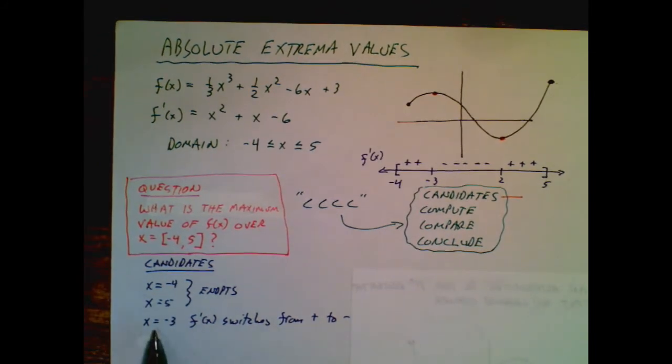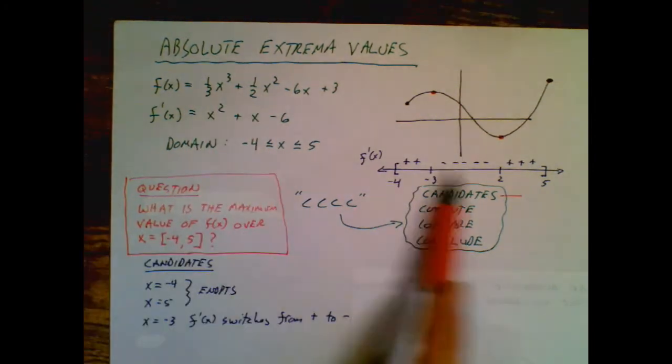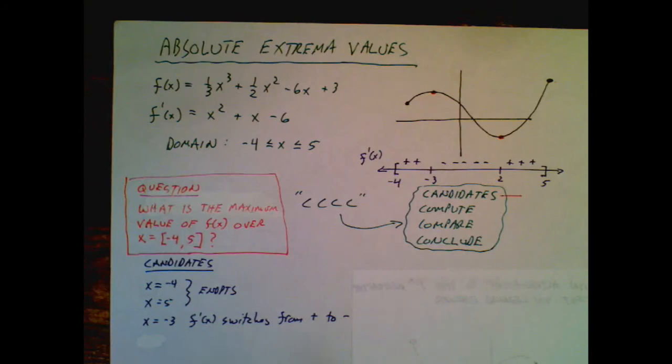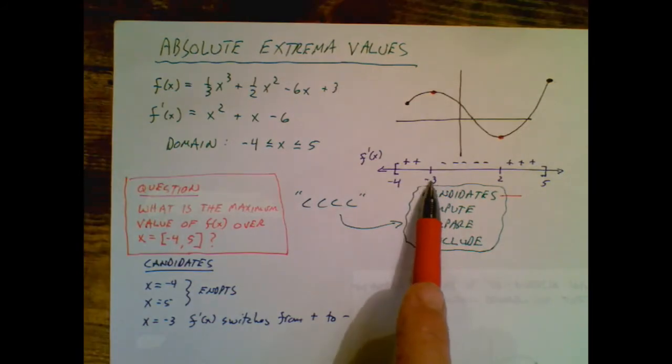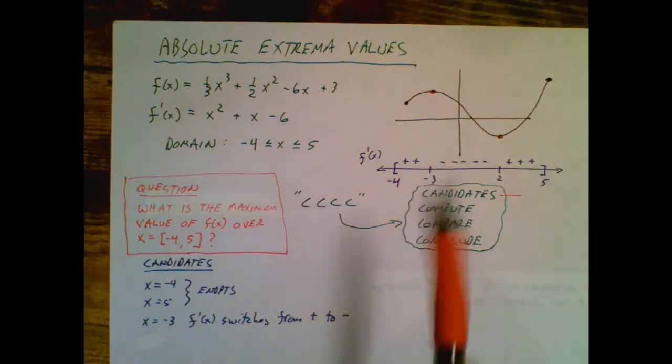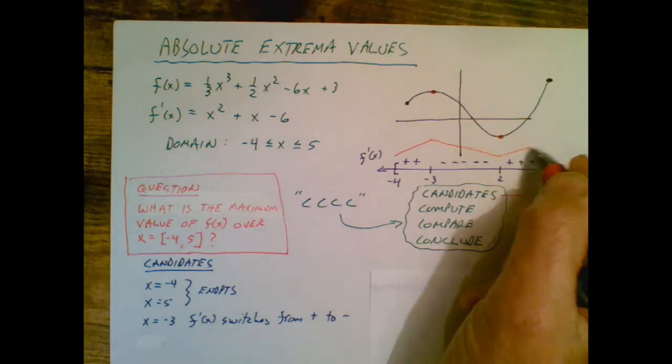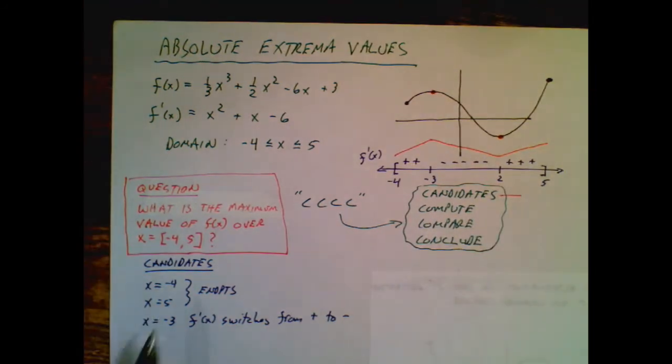And I also have another candidate, because during this process that we learned earlier, filling out the first derivative number line, I realized that negative 3 is also a maximum. So I have three candidates. This one, because I know it was going to be a maximum, because my function is going uphill, then downhill, then uphill, and the two endpoints.